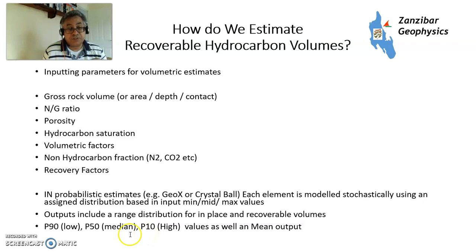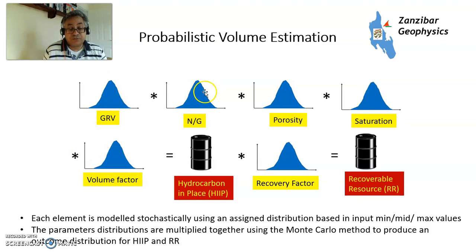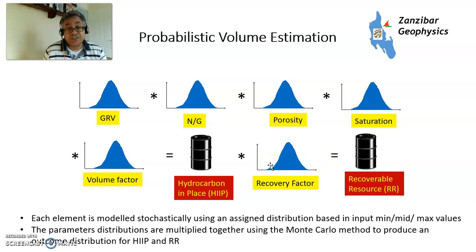For a probabilistic estimate you have a distribution of gross rock volumes, distribution of net-to-gross, distribution of porosities, distribution of saturations, and distribution of volumetric factors — that gives you the hydrocarbon in-place ranges. Then you multiply that by a distribution of recovery factors to get a recoverable resource estimate. These parameters have particularly different types of distributions, and I may make a separate video on how these things work.